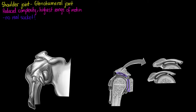Now let's have a quick think about this joint. We know it's a synovial joint, meaning that it's going to be diarthritic or freely movable. All of our diarthritic joints are freely movable. And it is also a multi-axial ball and socket joint.